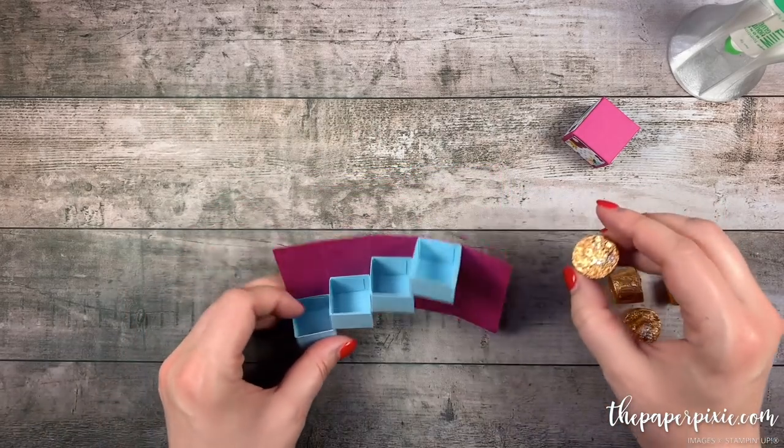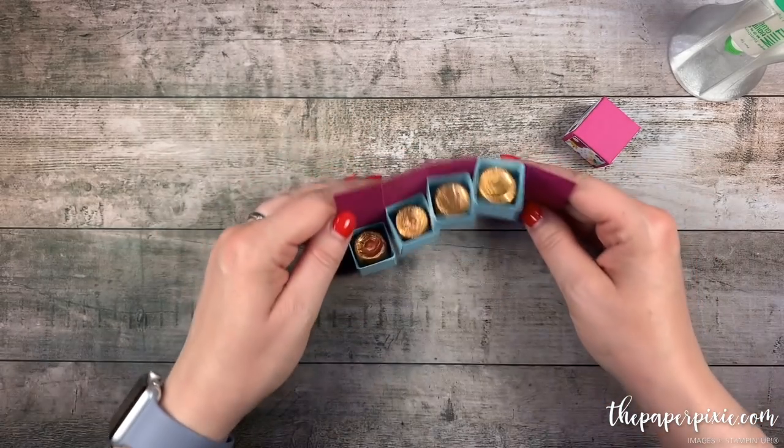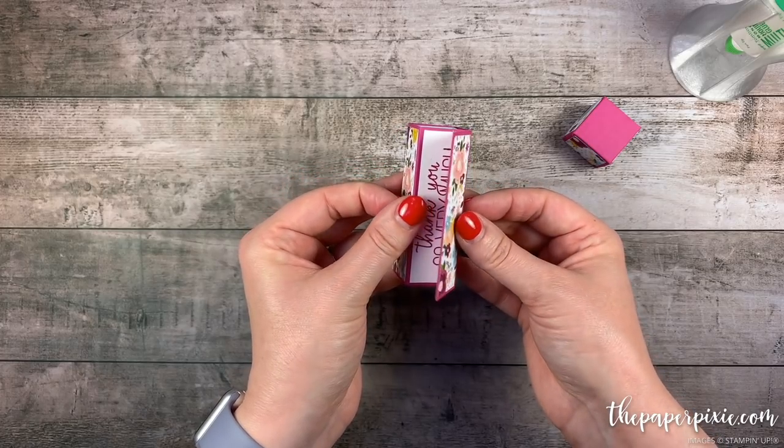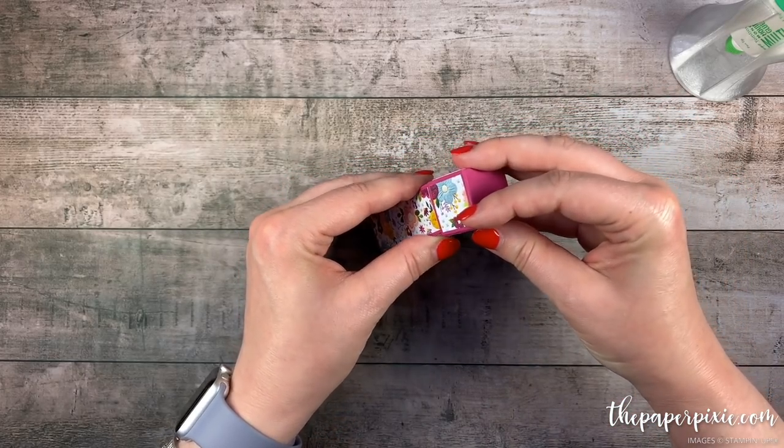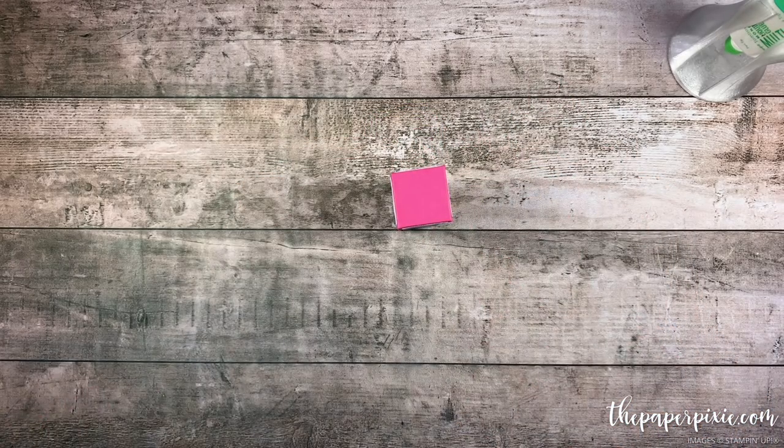We're going to put in our Rolo candy and as we close this I'm just going to make sure the sentiment is folded in first and then this final panel and then we put our box lid on which should be a perfect fit like so and let's decorate this box top really quickly.